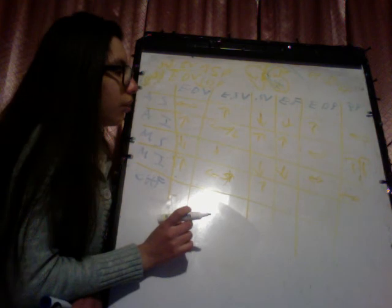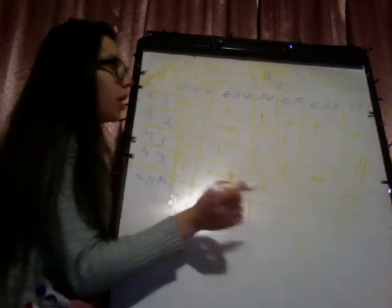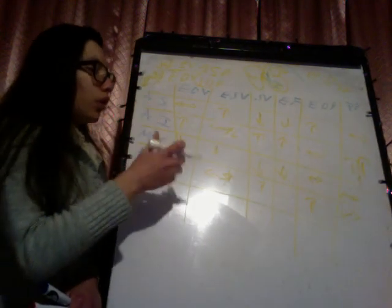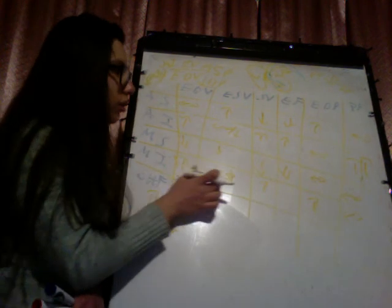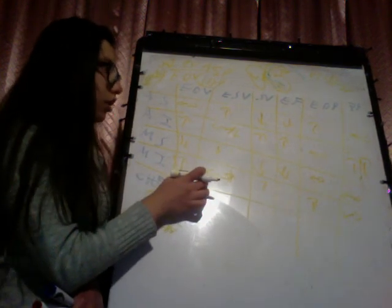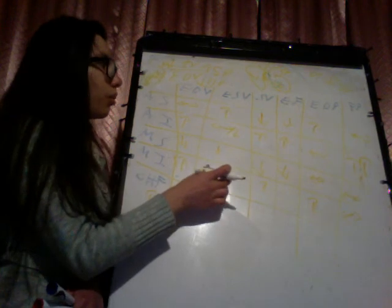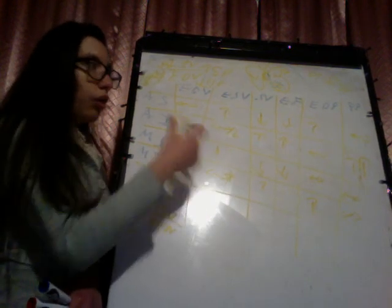Pulse pressure remains the same, and ejection fraction is increased. We have increased stroke volume and increased end diastolic volume, but the stroke volume increases more. In mitral insufficiency, we have more volume at end diastole, so we can send more volume out. Because of the decreased resistance in the atrium, we send to the atrium as well, and the end systolic volume is decreased.